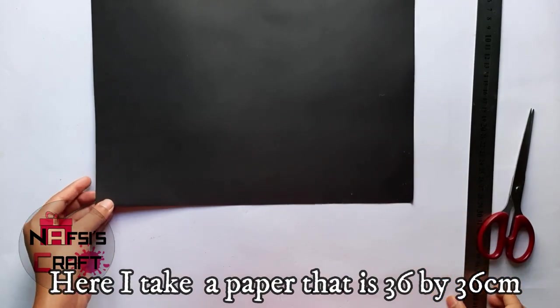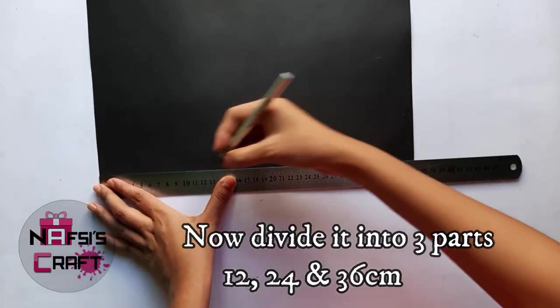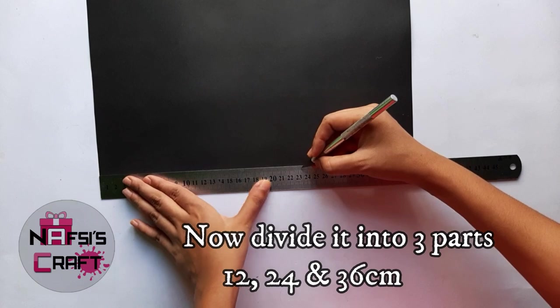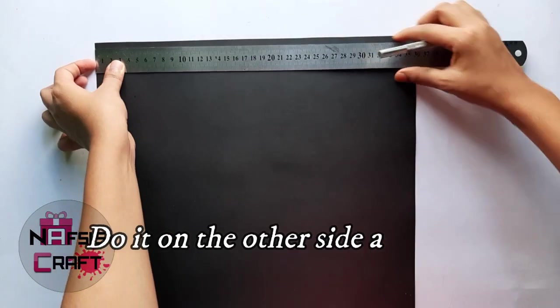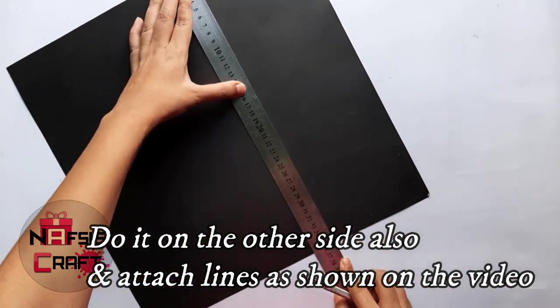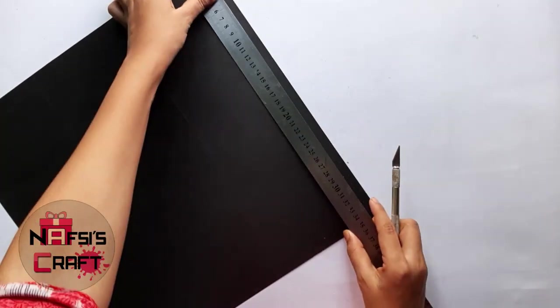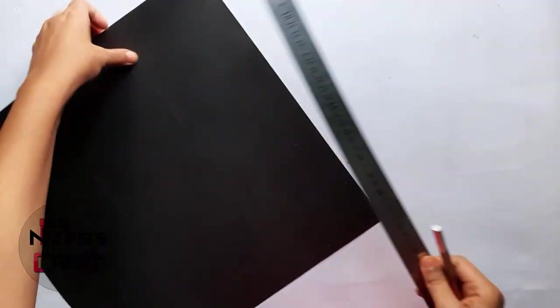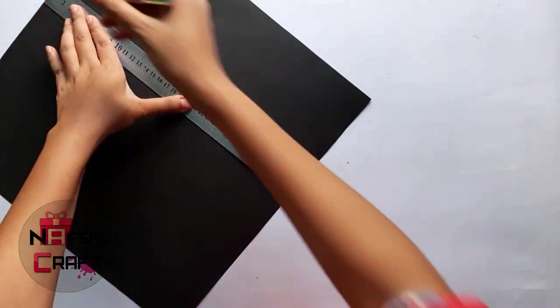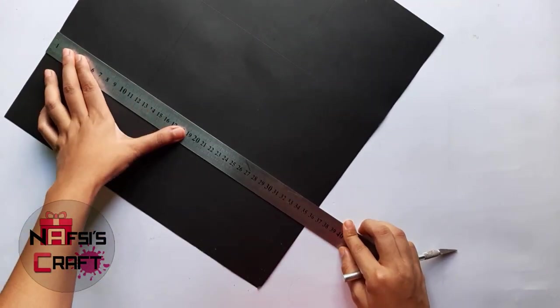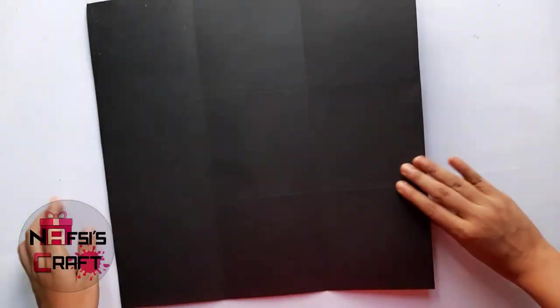For the main box I take a square shape paper that is 36 by 36 cm. Now I divide it into three parts that is 12, 24, and 36. Take this also for the other side, now attach them. And I also take 12, 24, and 36. Now I just fold the paper.